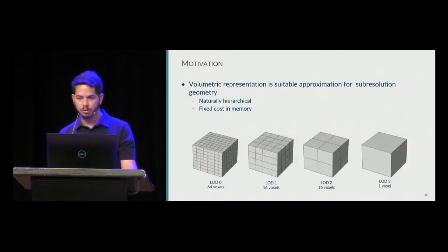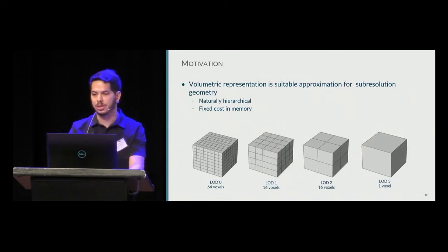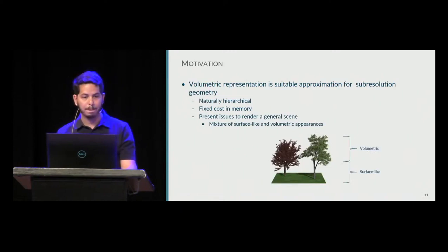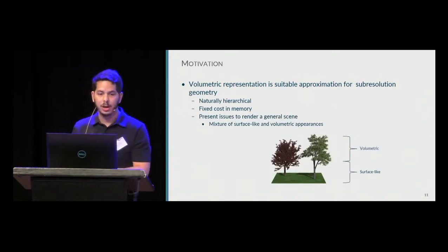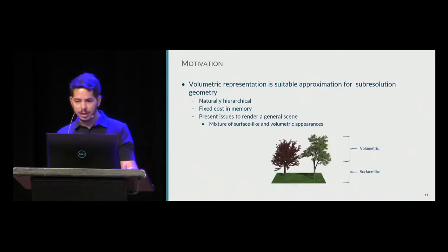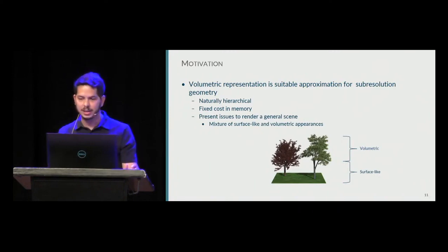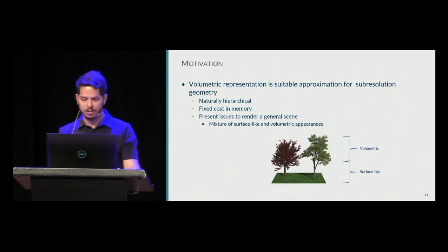Another solution is to approximate a scene using a volumetric representation. A voxelized representation presents a natural model with a fixed cost per voxel. However, providing one approximation that can handle both volumetric and surface-like appearance — like a tree where the trunk is surface-like and the leaves have a more volumetric appearance — can be quite challenging.